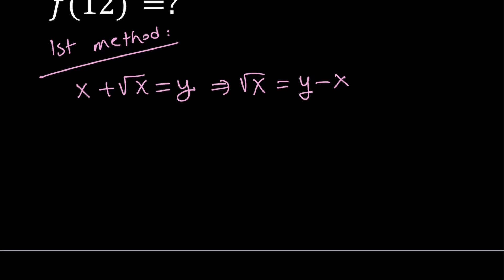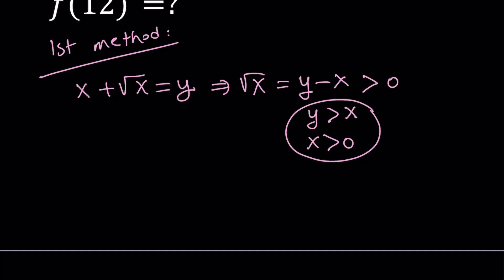Since √x — obviously if x = 0 you get f(0) = 0, that's a different story. But suppose x does not equal 0, because that would just imply y = 0 automatically. If x ≠ 0, √x is defined only for positive values, so √x > 0. Therefore y − x > 0, which implies y > x. And since y > x and x must be positive for this to be defined, that also implies y > 0 as well.